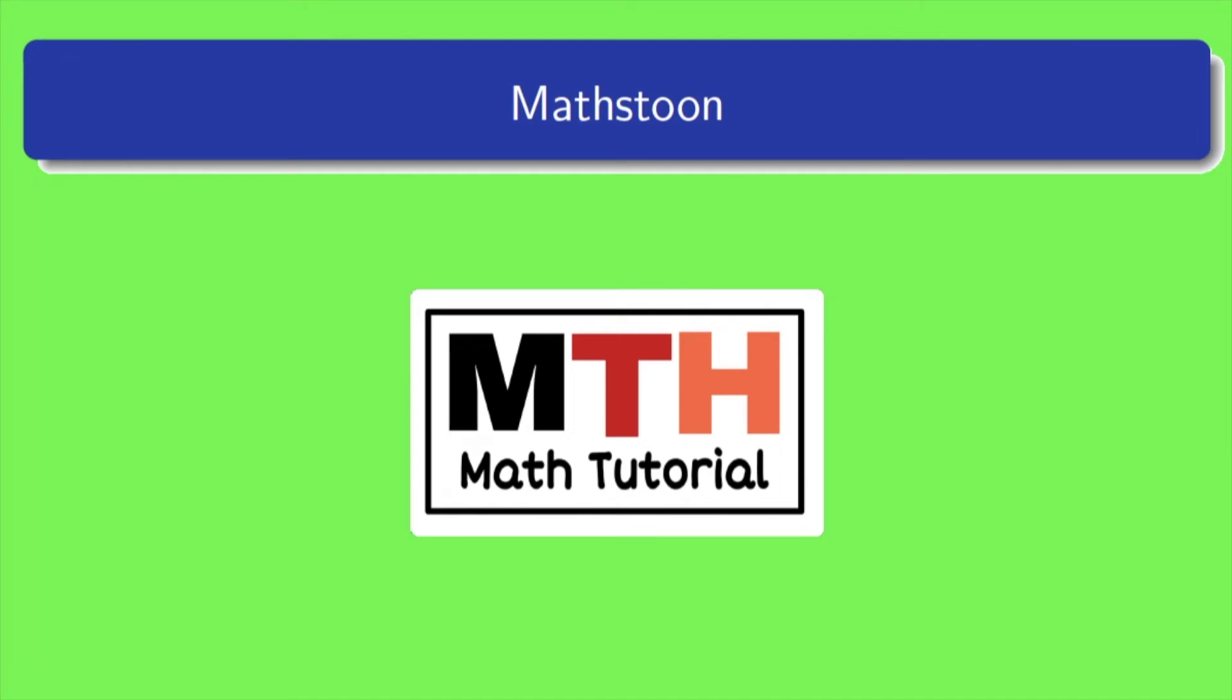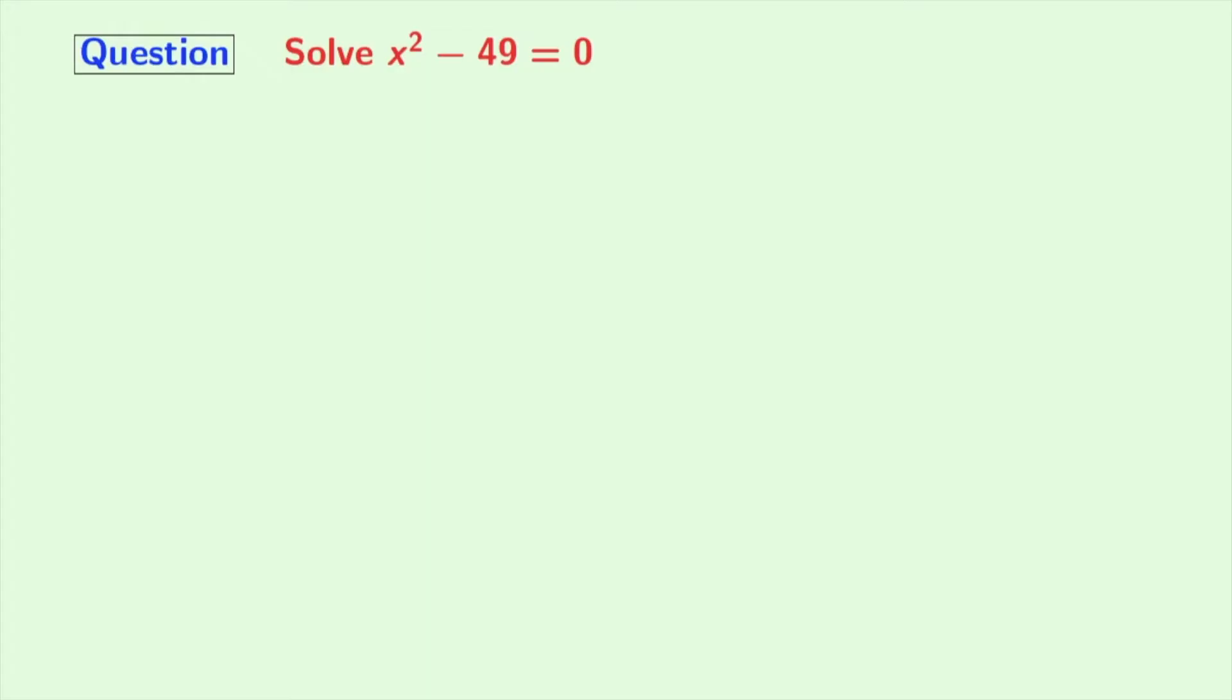Hi friends, welcome to Mathstoon. In this video, we will learn to solve x squared minus 49 is equal to 0. For more updates, you can visit mathstoon.com or check the link given in the description box. Now let's get started.